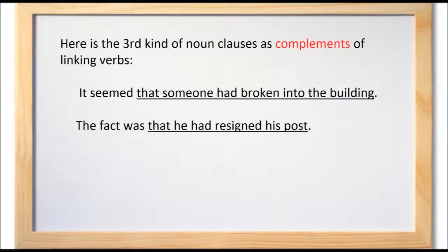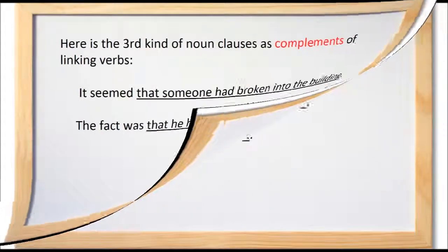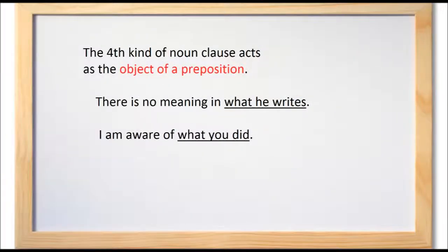Here is the third kind of noun clause — as complements of linking verbs. For example: 'It seemed that someone had broken into the building.' and 'The fact was that he had resigned his post.' The fourth kind of noun clause acts as the object of a preposition: 'There is no meaning in what he writes.' and 'I am aware of what you did.'